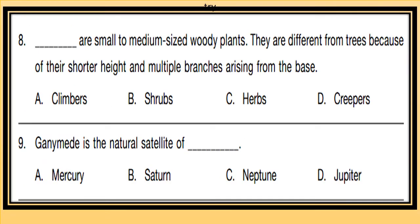Question 8: These are small to medium-sized woody plants, different from trees because of their shorter height and multiple branches arising from the base. Identify this type of plant. Options are: climbers, shrubs, herbs, or creepers.